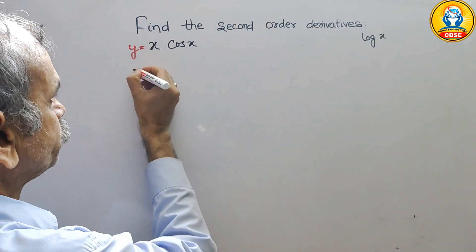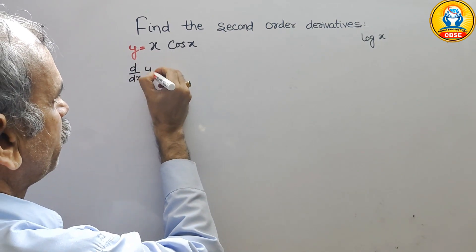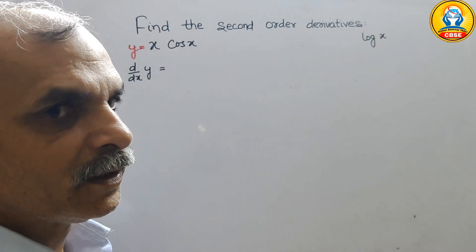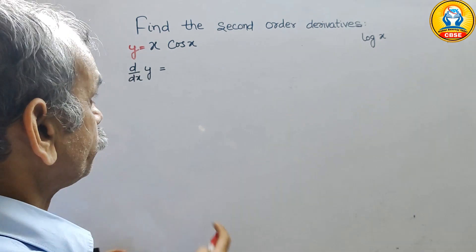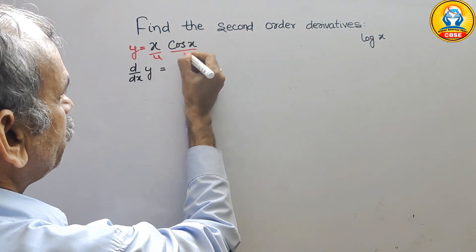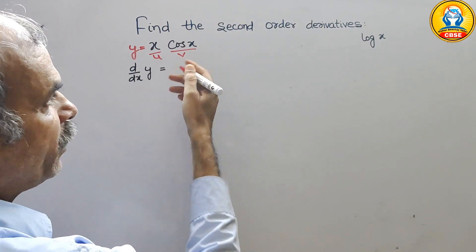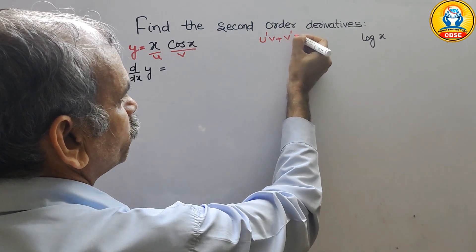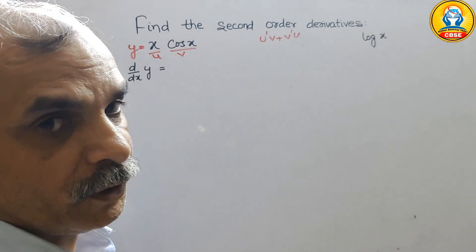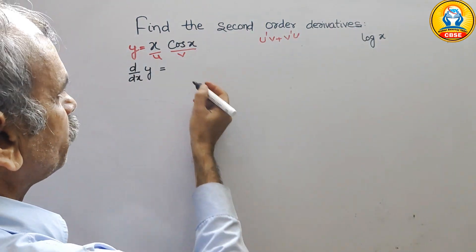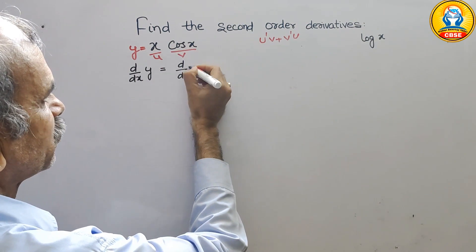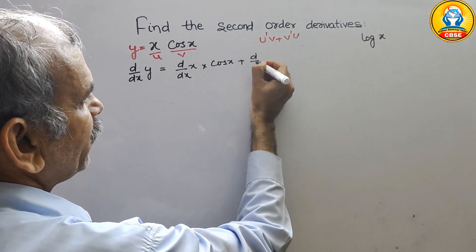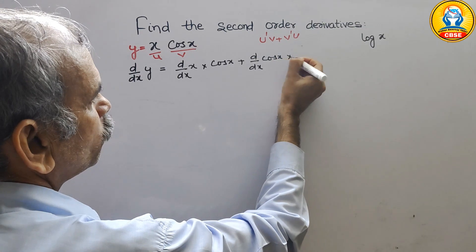So d by dx of y — you can see here x is there and cos x is there, which means they are in the form of u and v. This is your u and this will become your v. For u and v, the derivative formula is u dash v plus v dash u.